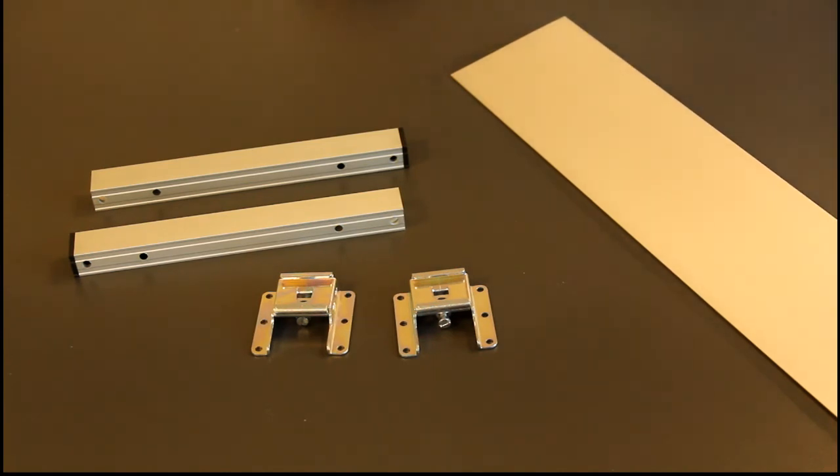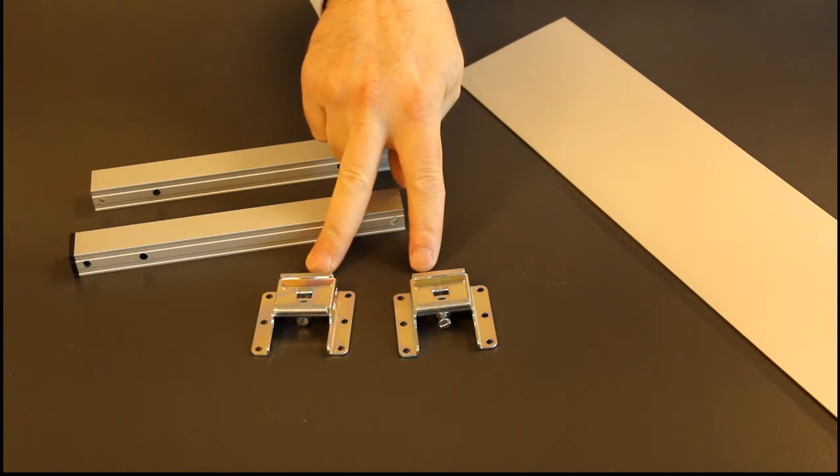There are also some optional extras and accessories that are compatible with the Excellent 60 soft close. These include easy fix pelmet mounting brackets. These enable you to attach your own length of timber or MDF which can be painted to match the room decor.